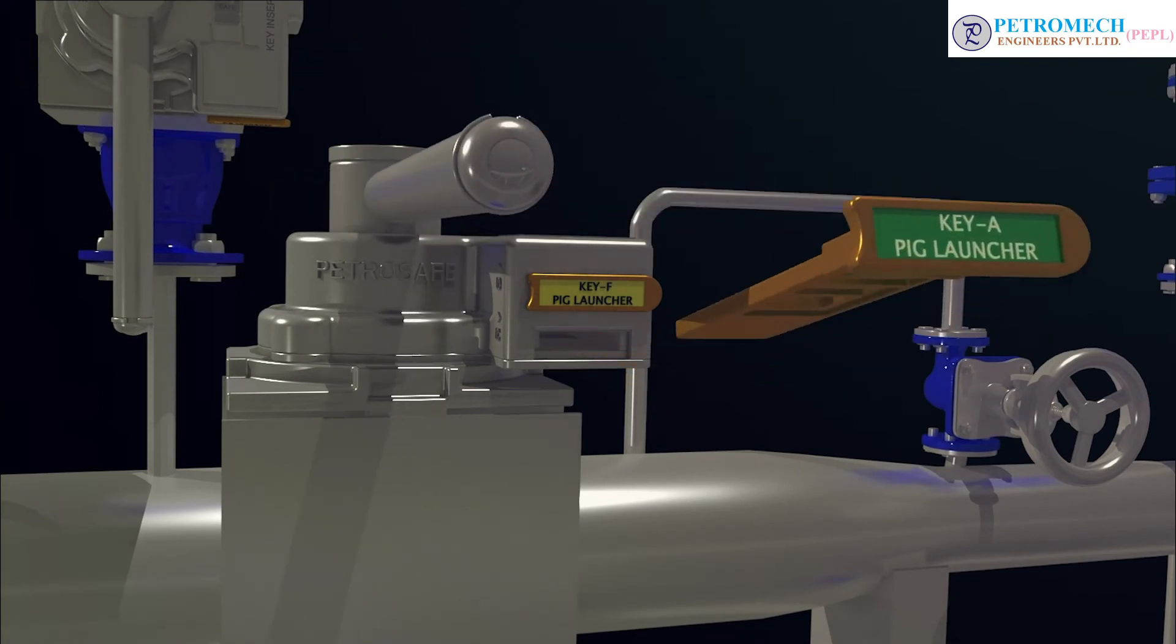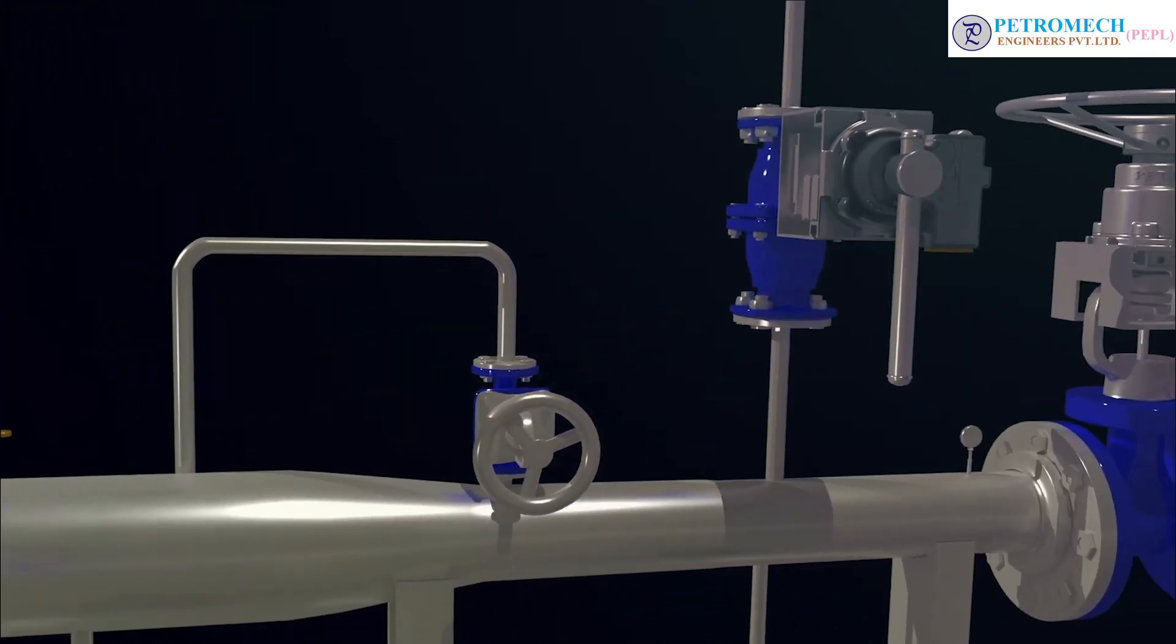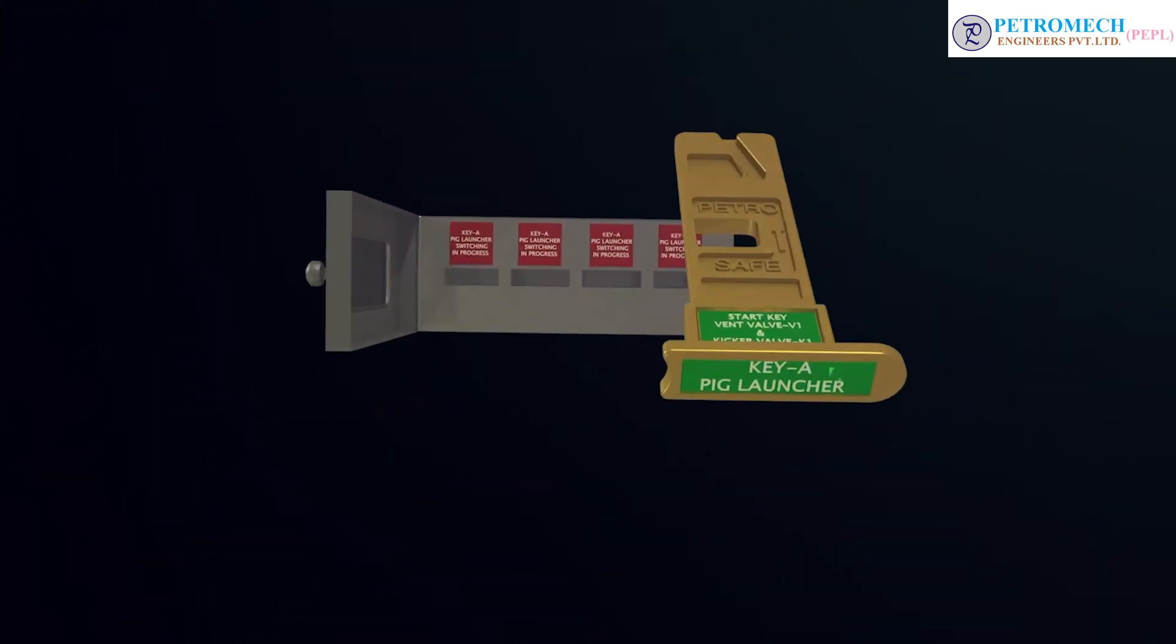Close balancing valve BL1. Step 21: Key A is placed to the control room key cabinet.